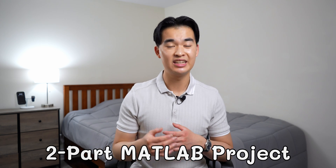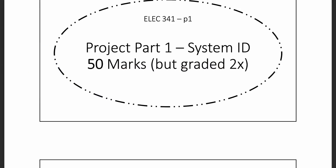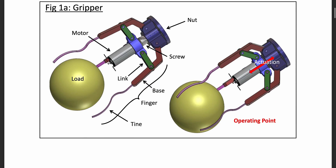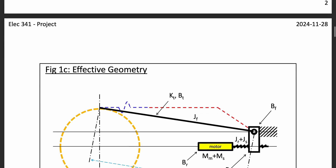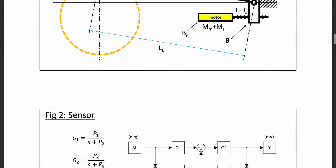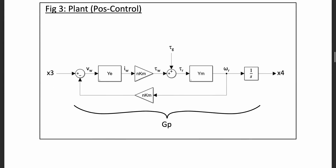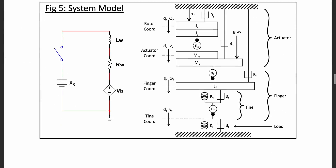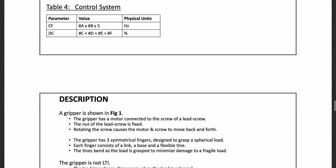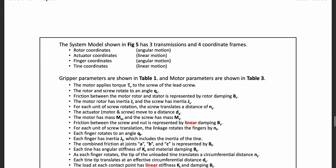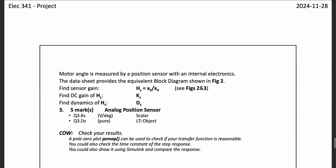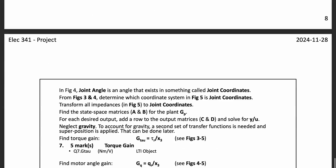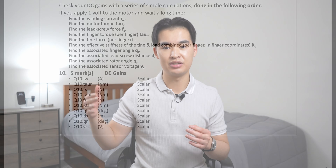You will also have a two-part project to complete in ELEC341. The project is pretty much just a longer MATLAB assignment and involves a mechanical system which you will first model and identify in the first part, and then design a controller to control it in the second part. The first part of the project is due at the halfway point of the course and the second part is due at the end of the course.